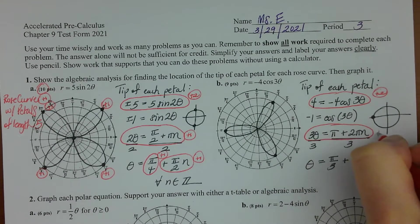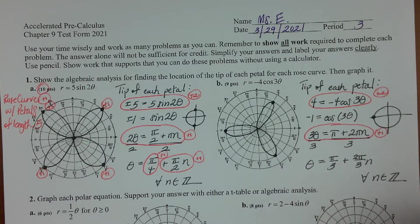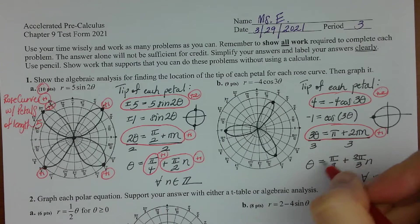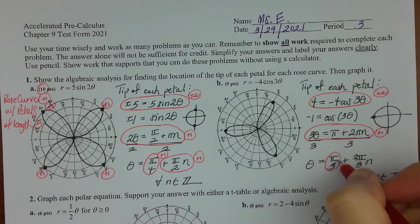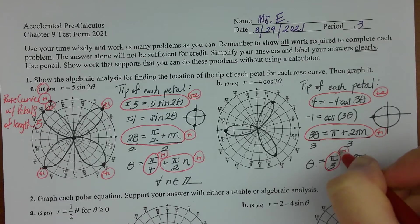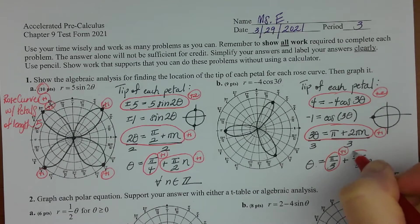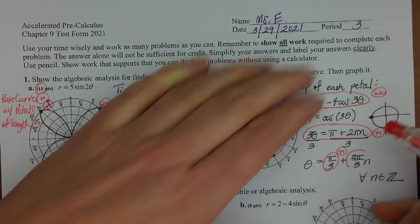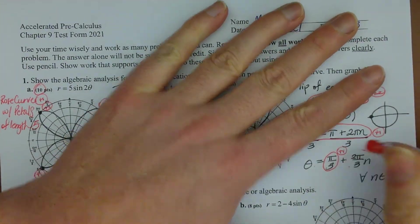Okay. One point for having three theta set equal to pi plus two pi n in your work along the way. One point for setting theta equal to, having kind of this initial value here of pi over three.